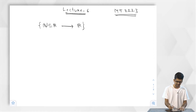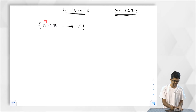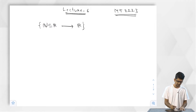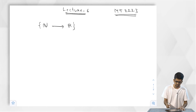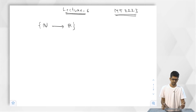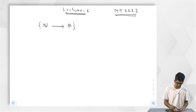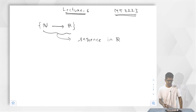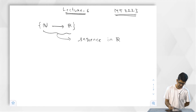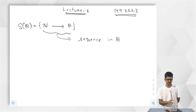This notation is only to remind where this set is living, but n belongs to any subset of R. So now we want to study the set of all functions from N to R. A function from N to R goes by the name of a sequence in R. This set of all sequences we denote by SR — the set of all sequences in R.